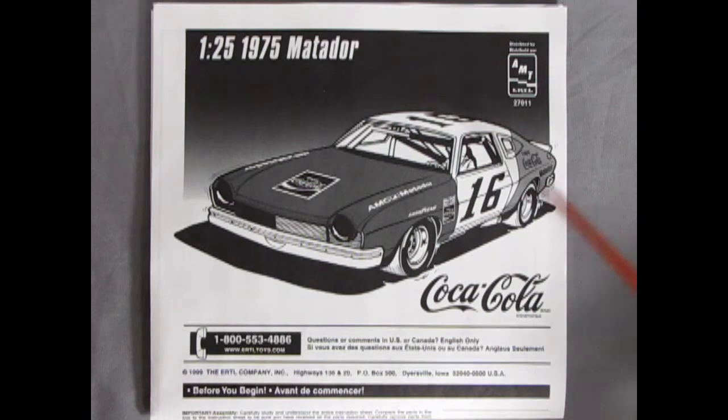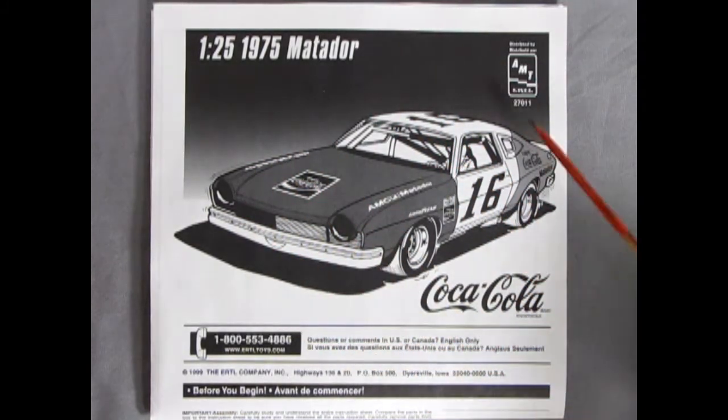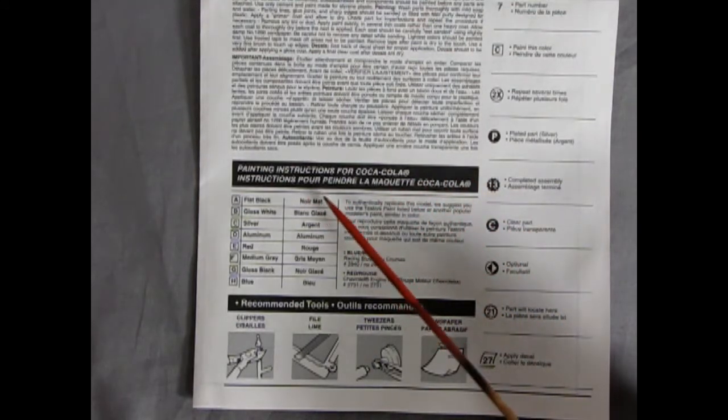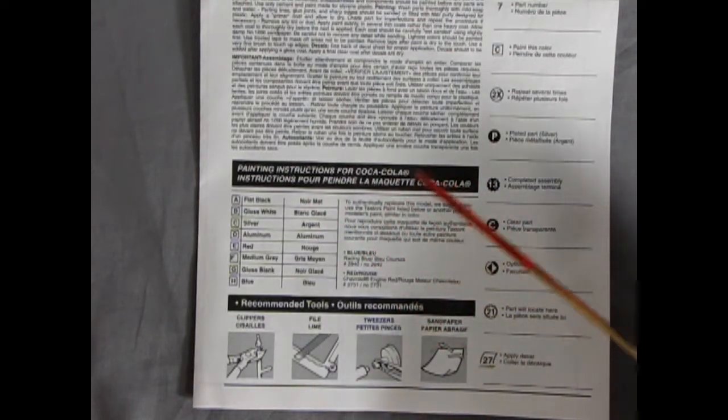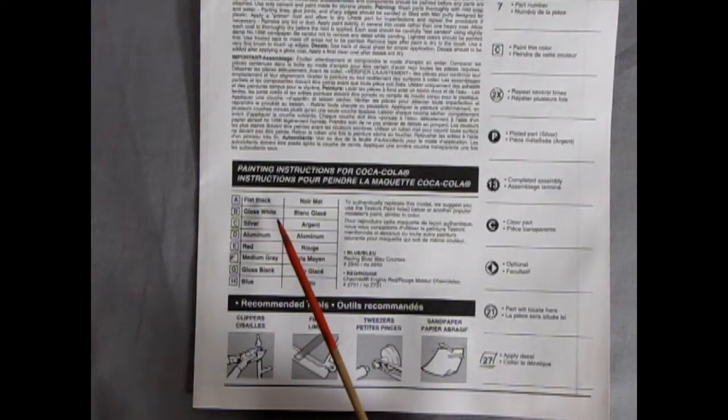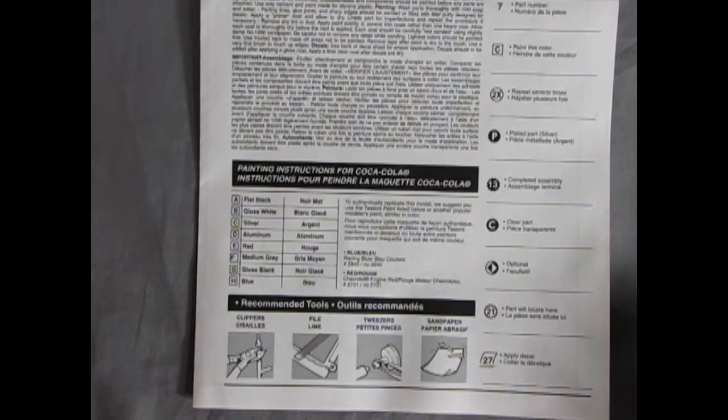And now we can take a look at our amazing instruction sheet. To start with, we've got a very nice illustration of the Mark Donahue car number 16. As we open up our instruction sheet, we do have these nice painting instructions for the Coca-Cola car, which of course was driven by Bobby Allison and Mark Donahue, two different cars. They've got flat black, gloss white, silver, aluminum, red, medium gray, gloss black, and blue. The red, white, and blue were the American Motors color schemes.